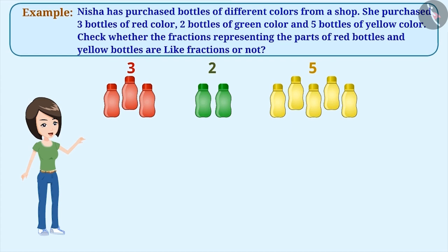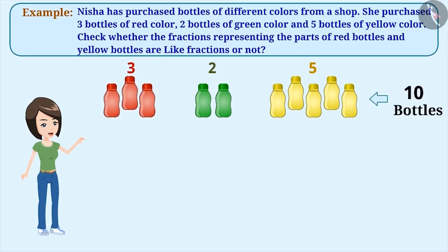Nisha purchased three red bottles, two green bottles, and five yellow bottles. So she purchased a total of ten bottles. Of these, the red bottles are three out of ten, so the fraction will be three by ten.